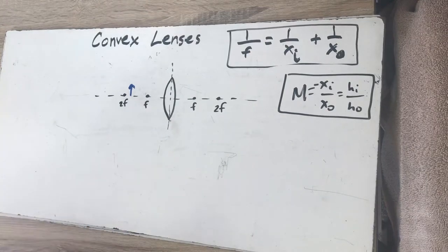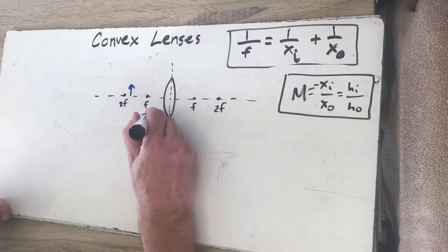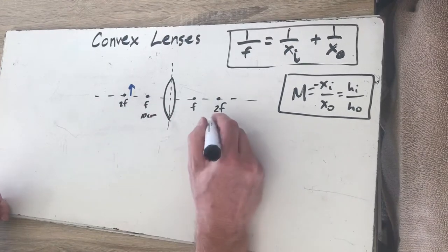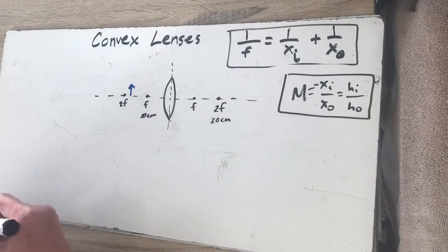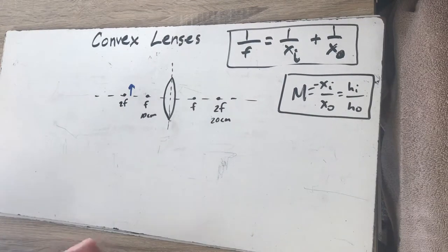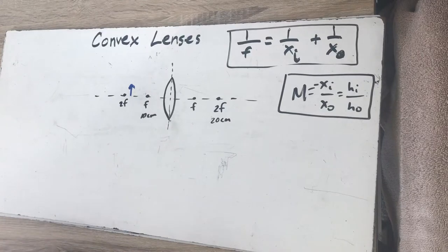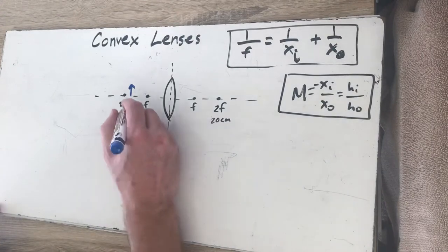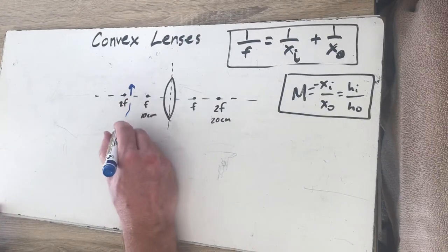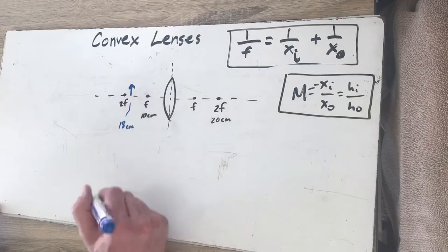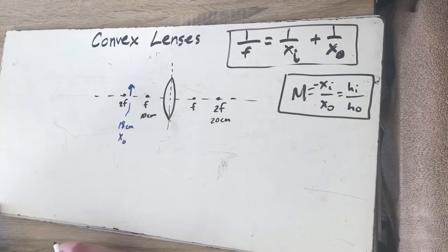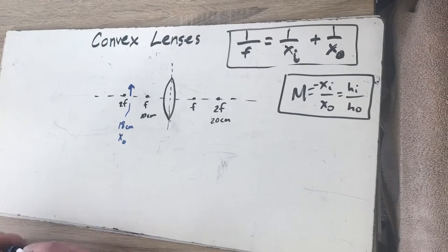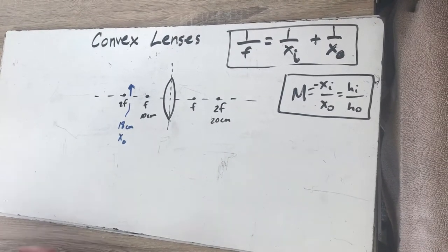So I'm going to pick some numbers here. Let's say this is 10 centimeters, which is going to make this 20 centimeters. And I put a blue arrow here for an object, this would be like a filament that we used in our experiments. Let's just say that is at 18 centimeters from the lens. That would right there be called our XO, the distance for our object. Now let's take a look at how we would analyze this.